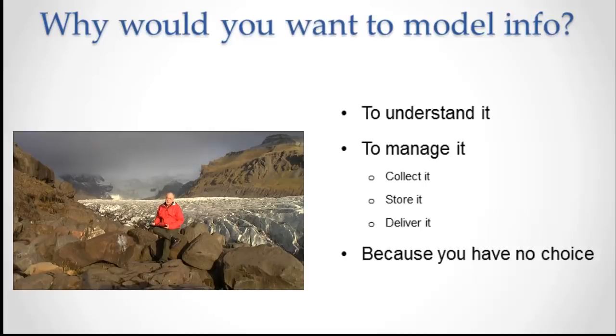And finally, you model information because you really have no choice. If you're someone like Facebook, every person has to be modeled. Every person has to behave according to the same rules, otherwise your data will be a mess. Can you imagine a billion different people in Facebook and all of them have different attributes? All of them behave differently? Can't do it. So really, in the end, we model the information because we really have no choice but to model it, otherwise our systems would just fall over from the complexity.